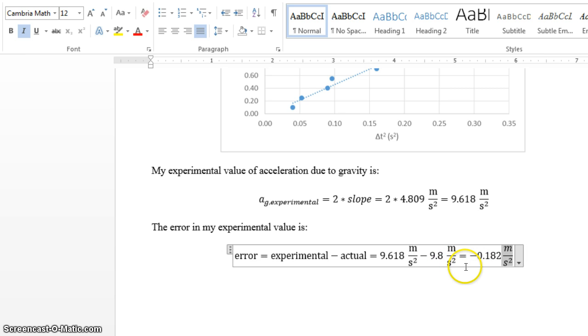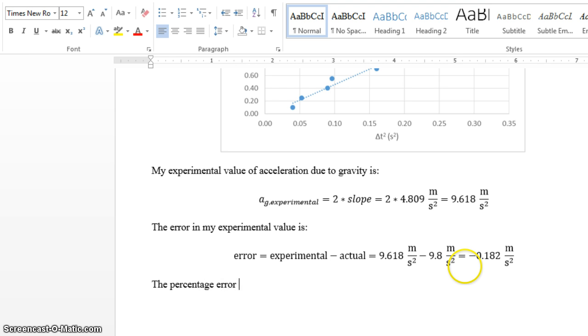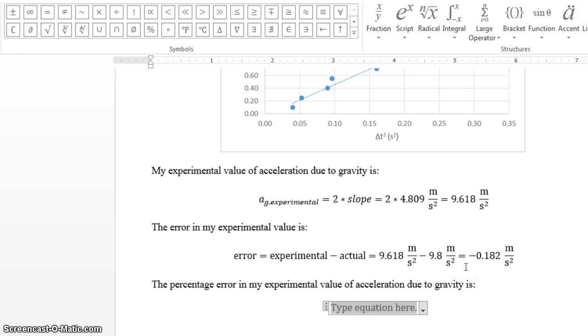The error, the amount by which you're off, has units. Good. The percentage error in my experimental value of acceleration due to gravity is, again, equation builder.